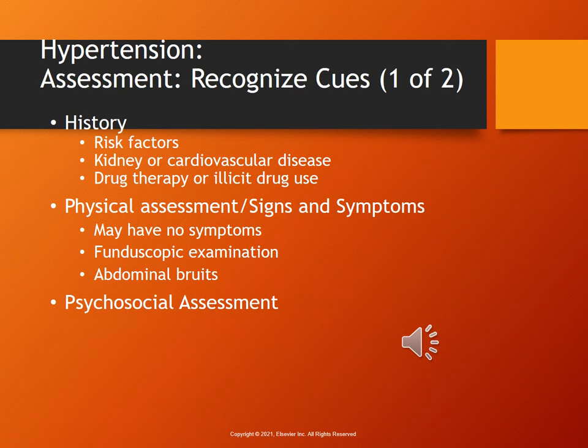How do we assess for hypertension? It is very important that it is caught early. A lot of people don't have any symptoms. If they do, they may have dizziness, flushing, or headaches. We would do a fundoscopic exam, which is where you check the eyes for vascular changes in the retina. You may also hear an abdominal bruit if there is renal artery stenosis, which would be caused by long-term hypertension. Psychosocially, if people are very stressed — for example, someone caring for a sick loved one — their hypertension may develop or worsen. We want to assess coping strategies and help people reduce their stress to naturally reduce their hypertension.